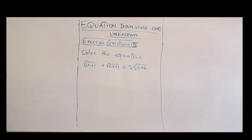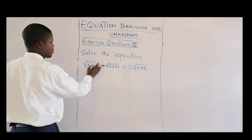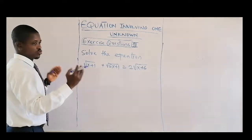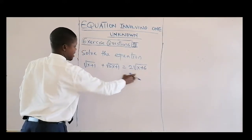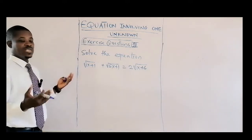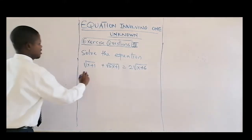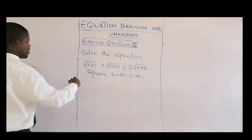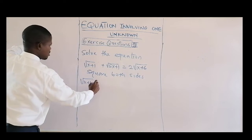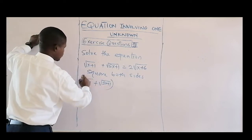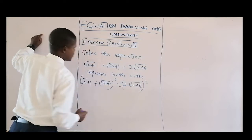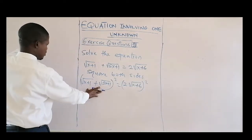The next question involves a radical equation — a square root expression. The equation has been grouped into two parts: one square root term and a constant. To remove the square root, we square both sides. Squaring gives us (√(5x+1) + √(x+1))² on the left, equal to 2² times (x + 6) on the right.